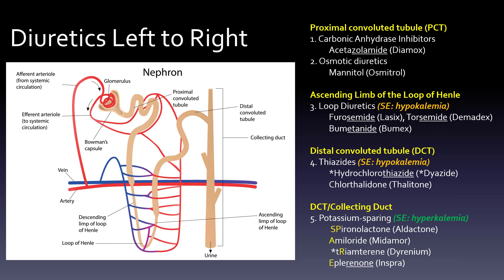Our western region is the proximal convoluted tubule — proximal meaning close to the glomerulus in that high-pressure system. That's where we find, one, the carbonic anhydrase inhibitors like acetazolamide (Diamox), and two, the osmotic diuretic mannitol (Osmotrol).